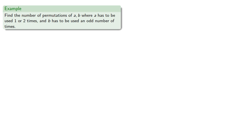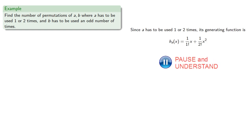Since a has to be used one or two times, its generating function is x plus one-half x squared. Since b has to be used an odd number of times, its generating function is given by the odd terms.